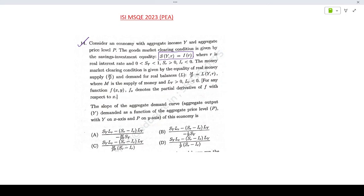Sy lies between 0 and 1, Sr is positive, Ir is negative. The money market clearing condition is given by the equality of real money supply and demand for real balances: M/P equals L(Y,r). We need to find the slope of the aggregate demand curve, aggregate output Y demanded as a function of aggregate price P, where you have Y on the x-axis and P on the y-axis. Basically we need to find dP/dY for aggregate demand.